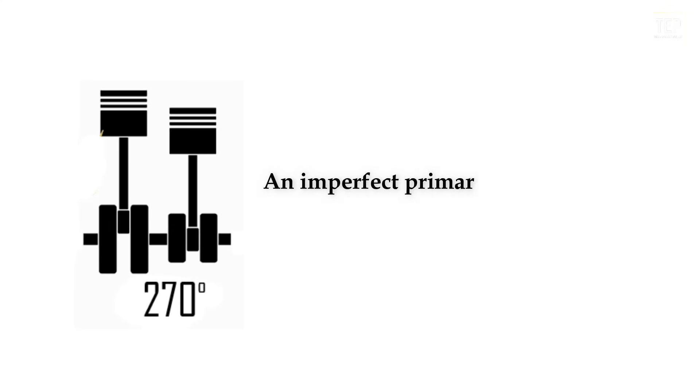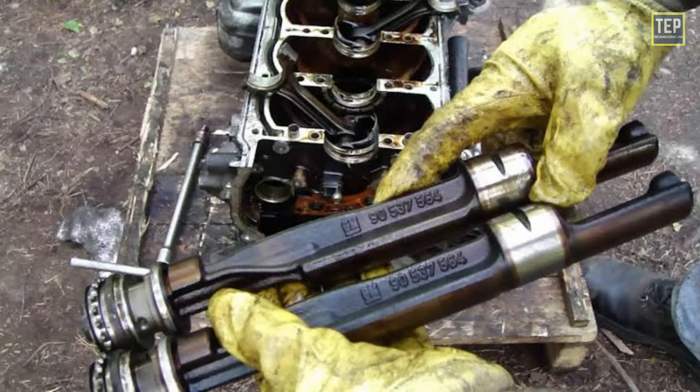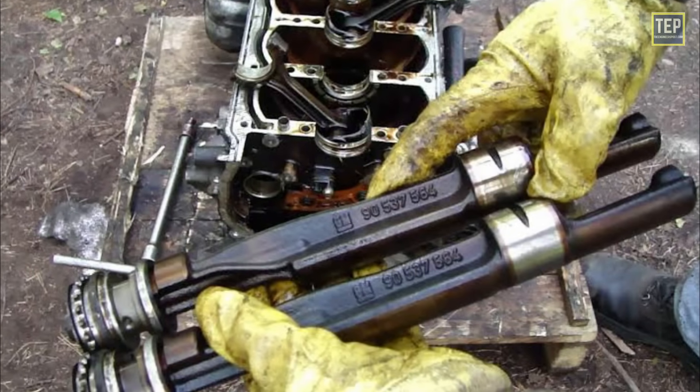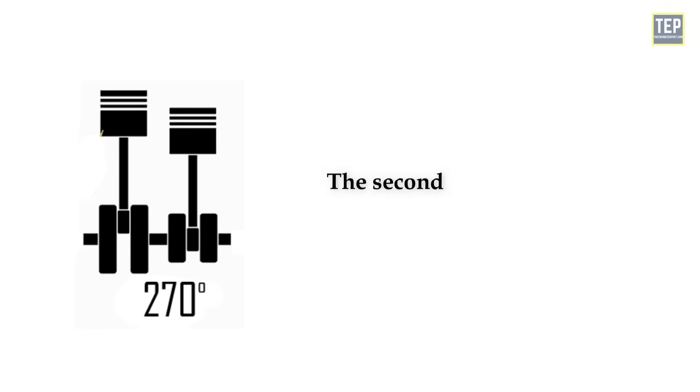An imperfect primary balance is created in a 270-degree straight twin engine. Due to a combination of free force and rocking couple, a balance shaft is often used to compensate for this. The secondary balance of a 270-degree engine is perfect.